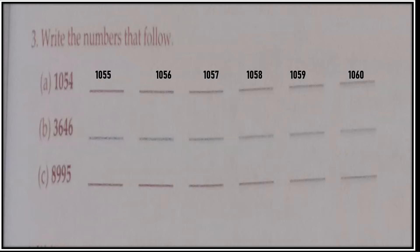Part B — starting from 3646. So: 3647, 3648, 3649, 3650, 3651. You make changes at the ones place. Remember, whenever 9 comes, after that you write 0 and also change the tens place digit to the next number — so 4 becomes 5 in forward counting.